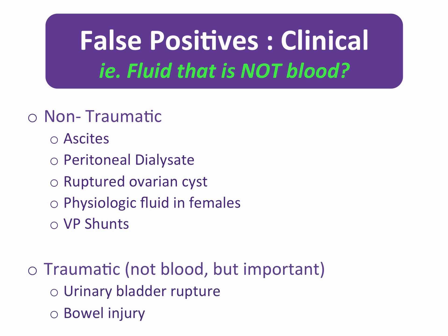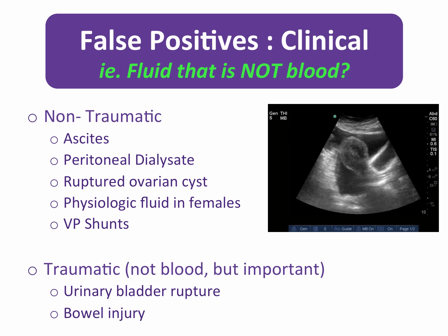In trauma scenarios, the fluid found may not be blood, but may still signify important traumatic injuries, as in the case of intraperitoneal bladder rupture and spillage of fluid from a bowel injury — technically false positives for hemoperitoneum, but certainly important to investigate nonetheless. Furthermore, female patients of reproductive age may have a small amount of physiologic fluid in the pelvis. As a general rule, pelvic free fluid is deemed abnormal when it extends more than 50% along the uterine wall in the posterior cul-de-sac, or when it is detected anterior to the uterus in the utero-vesicular space.